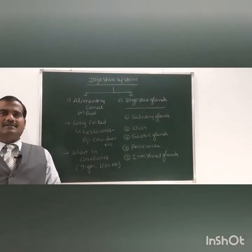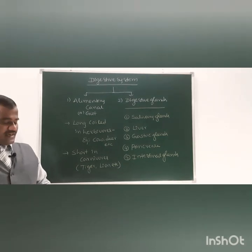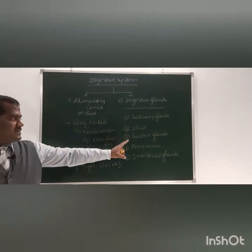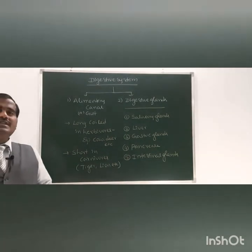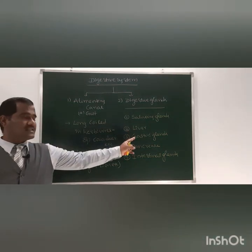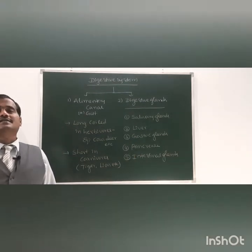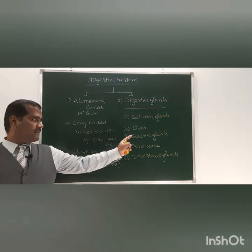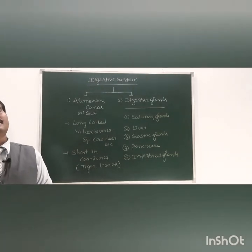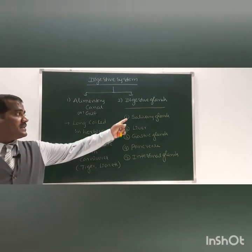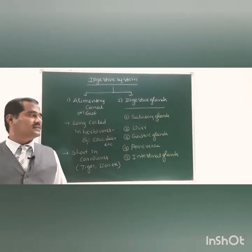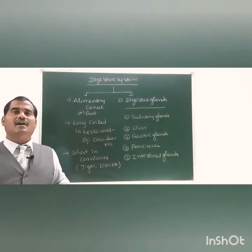Out of these five glands, three glands are associated glands — meaning they are not present in the wall of the gut. These three associated glands are: salivary glands, pancreas, and liver. The gastric glands are in the wall of the stomach, and the intestinal glands are in the wall of the small intestine. The salivary glands are on the sides of the buccal cavity. The liver is on the right side of the abdomen. The pancreas is on the left side of the abdomen, below the stomach.